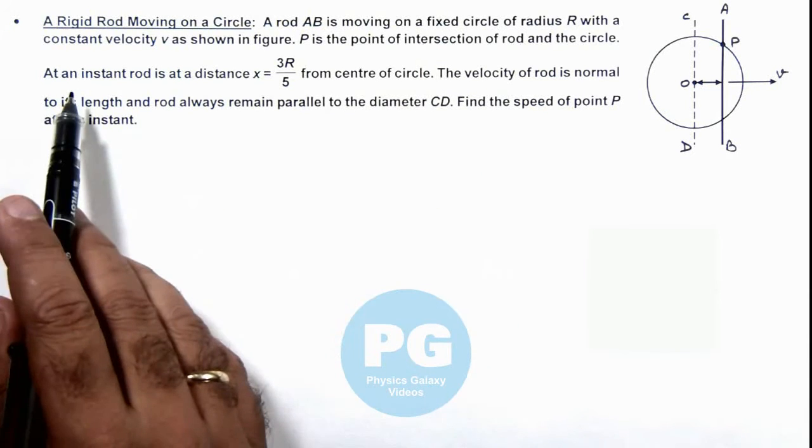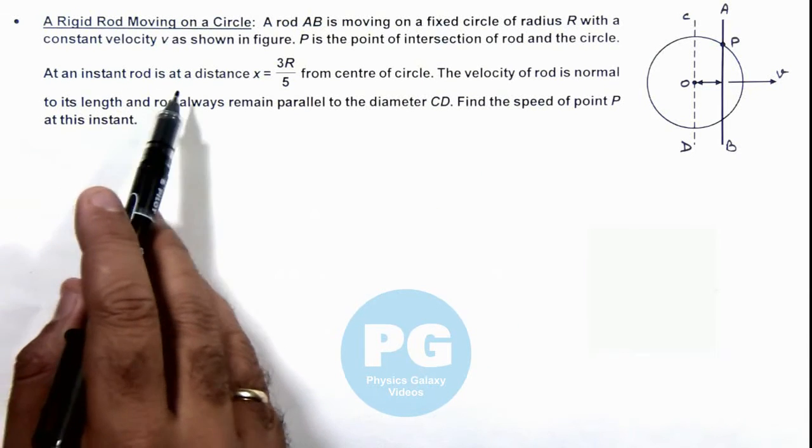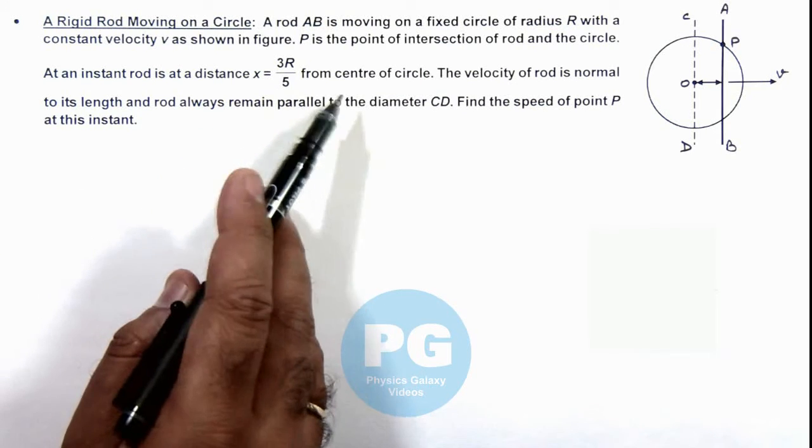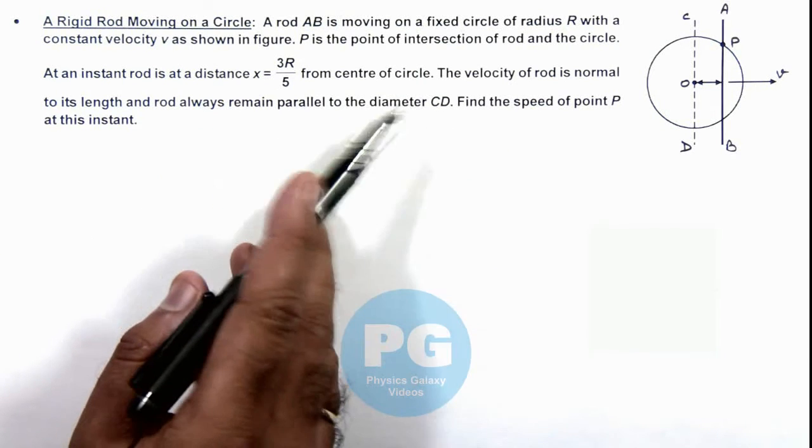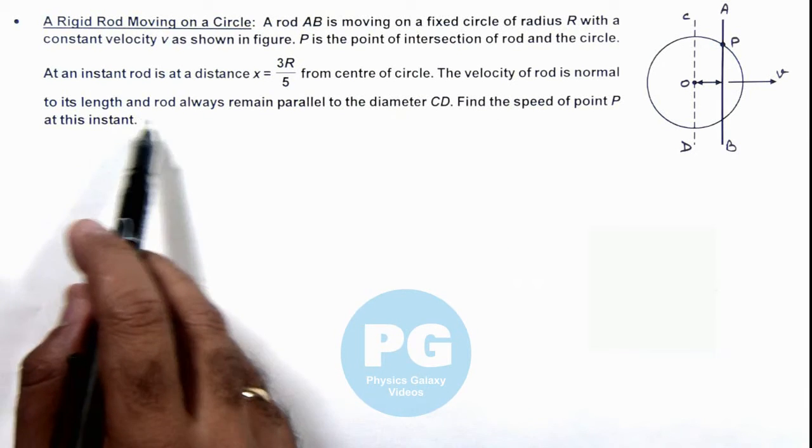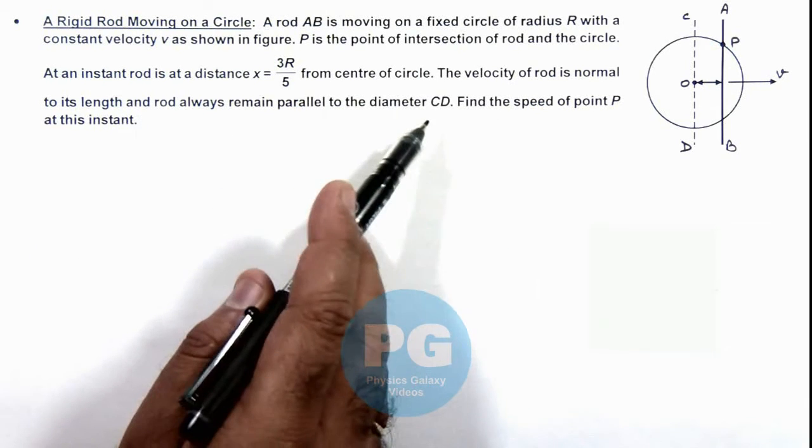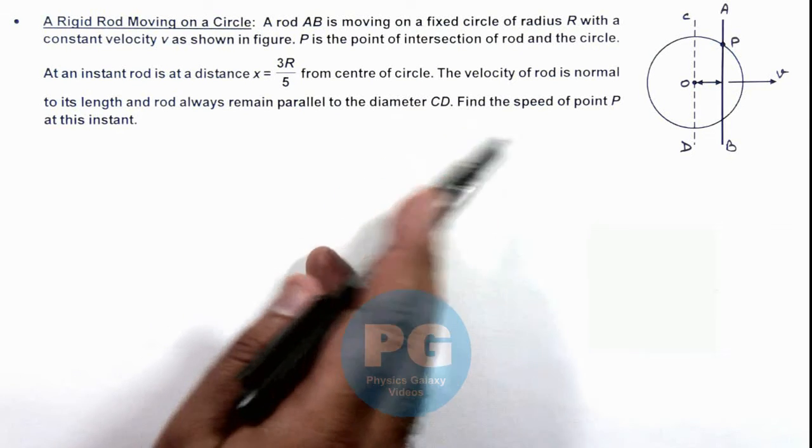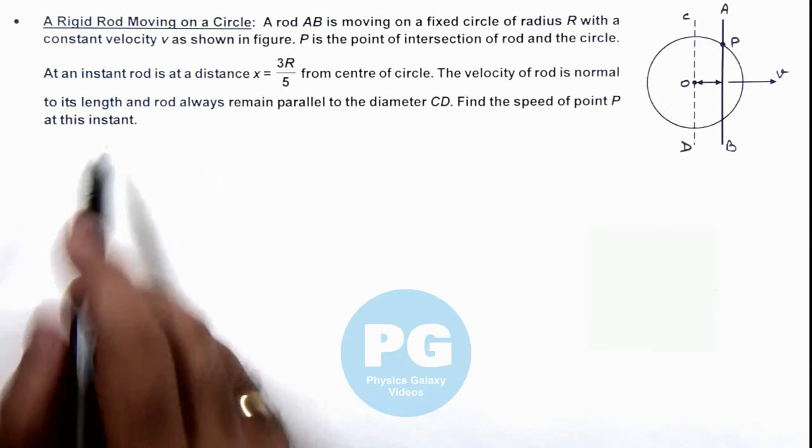At an instant, rod is at a distance x which is 3R by 5 from the center of circle. The velocity of rod is normal to its length and rod always remains parallel to the diameter CD. We are required to find the speed of point P at this instant.